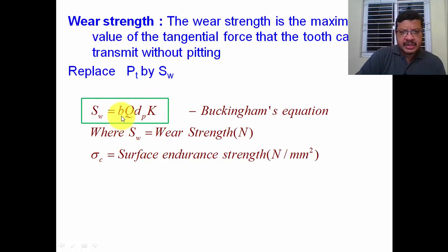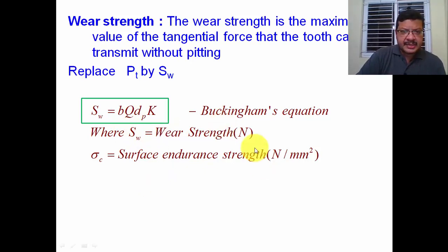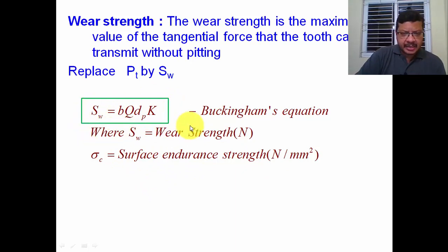Once k is known, b is the face width (given in the problem), q is the ratio factor q = 2·zg / (zg + zp), and dp = m·zp is the pitch circle diameter. In this way, the wear strength of the gear teeth can be found easily. Thanks for watching this video. If you like this video, please subscribe to my channel.